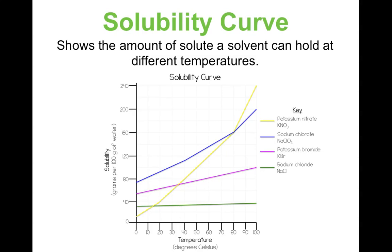Another question: at what temperature would the solubility of sodium chlorate be 200 grams? Sodium chlorate is the blue line. Go over to 200 grams on the y-axis, then find the blue line — and it can hold 200 grams at 100 degrees Celsius.